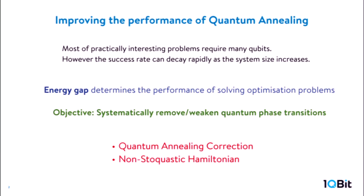The motivation of this study is to understand how to improve the performance of quantum annealing. Most practically interesting problems require a huge number of qubits, and if the system size becomes large, it gets harder and harder to get the right answer. Our success rate can decay very quickly, and we can't trust the computational result of quantum annealing. We want to keep the success rate as high as possible.